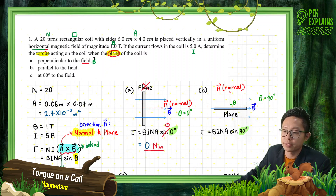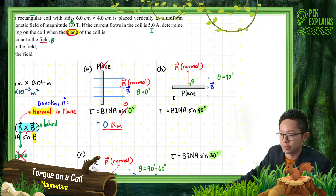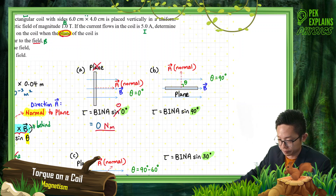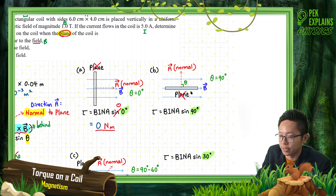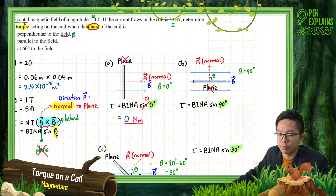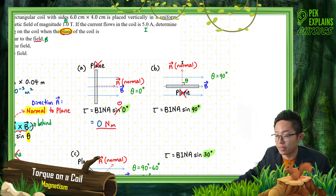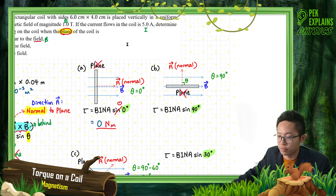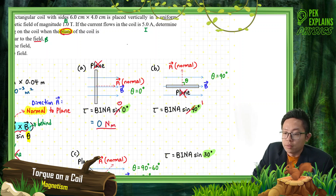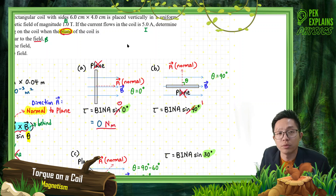For question B, the plane is now parallel to the field. Again, don't look at the plane — look at the normal. The normal to the plane is perpendicular to the magnetic field, so theta equals 90 degrees. Sin 90 equals 1. This is the maximum torque.